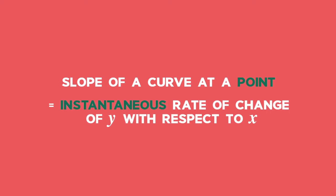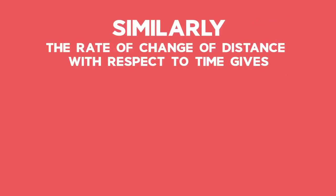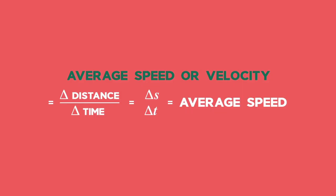When we find the slope of a curve at a point, we are finding the instantaneous rate of change of y compared to x. Similarly, the rate of change of distance with respect to time gives average speed or velocity.